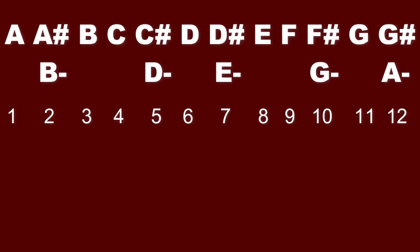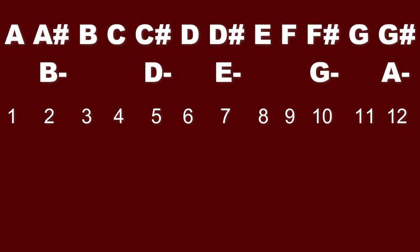Hello friends, welcome to my YouTube channel where we learn basic guitar lessons for beginners. Did you know we have 12 keys on the guitar? They are: A, A sharp, B, C, C sharp, D, D sharp, E, F, F sharp, G, and G sharp. I hope you are clear with these keys.